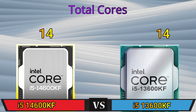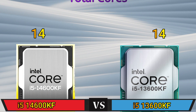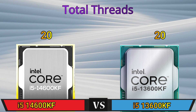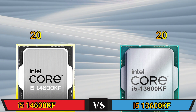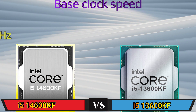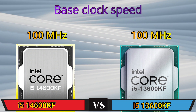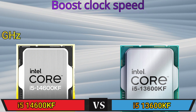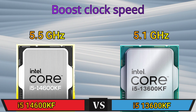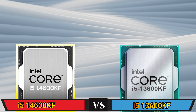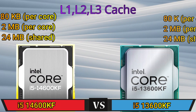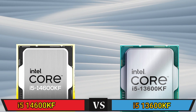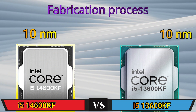CPU performance includes: total cores, total threads, base clock speed, boost clock speed, L1, L2, and L3 cache, and fabrication process.